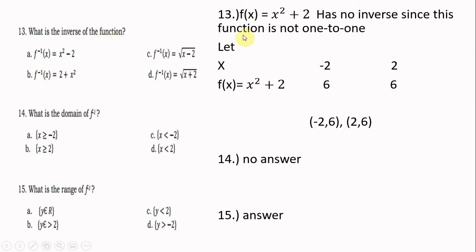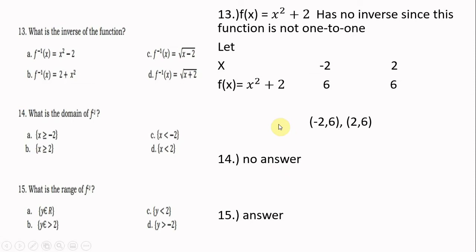Number 13: what is the inverse of f(x) = x² + 2? This function has no inverse since it is not one-to-one. To prove it: when x = −2 and x = 2, both give f(x) = 6. The ordered pairs (−2, 6) and (2, 6) share the same range value, so the function is not one-to-one and has no inverse. Therefore, questions 14 and 15 on domain and range of its inverse have no answer.